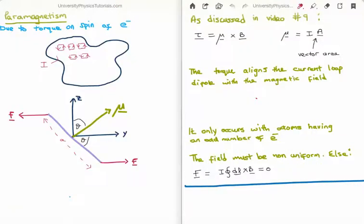Let's discuss paramagnetism further. The torque on the electron is due to the spinning of the electron. We have two magnetic moments due to an electron: one from orbiting the nucleus and one from spinning on its own axis. It is very difficult for the orbital motion around the nucleus to experience a torque, so we don't see significant effects there. However, the spinning electron on its own axis is quite easy to turn due to a torque, and as a result it will experience a significant torque and produce a large magnetic field.